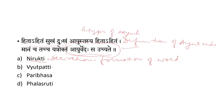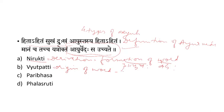The next option is Vyutpatti. What is Vyutpatti? Here, the derivation of the word Ayurveda is 'Ayushah Vidyate' — that is the origin of the word. The origin of the word Ayurveda is from the root 'Vid' dhatu. So it is not the definition. Vyutpatti means origin of the word.